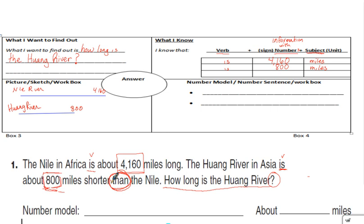The Wong River in Asia is about 800 miles shorter than the Nile. Anytime you hear the word 'than,' that means you subtract. Any time you see the word 'than,' automatically you subtract. Since we know 'than' means to subtract, what do I do next? I already have my picture. I can show work or write the number model in box four. You subtract 800 from 4,160, and we'll get our answer.